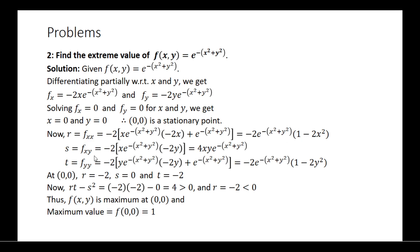Find out s and t. Now find out the values of r, s, t at the point (0, 0), and find the value of rt minus s squared. It is plus 4, which means it is greater than 0. The r value is minus 2, which is less than 0.